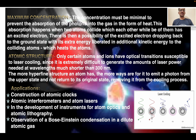Atomic structure: only certain atoms and ions have optical transitions suitable for laser cooling, since it is extremely difficult to generate the laser power needed at wavelengths shorter than 300 nanometers. The more hyperfine structure an atom has, the more likely it is to emit photons from the upper state and not return to the original ground state, removing it from the cooling process.